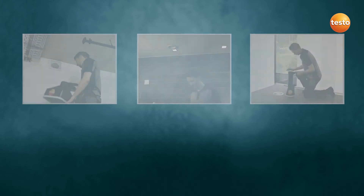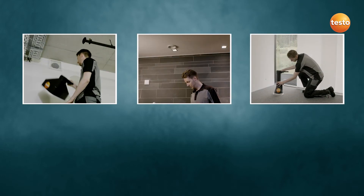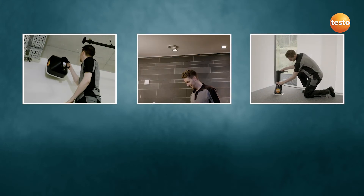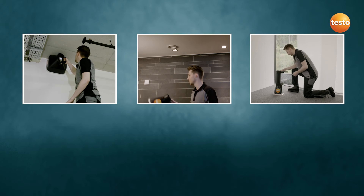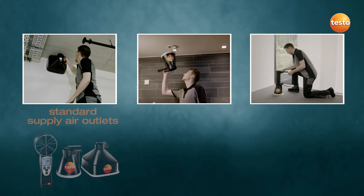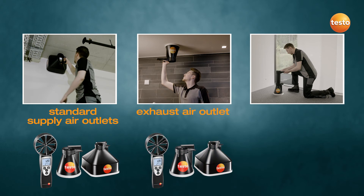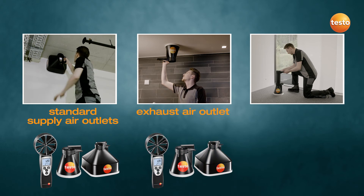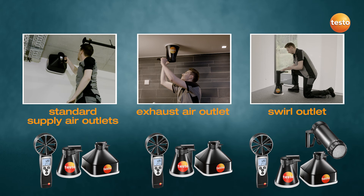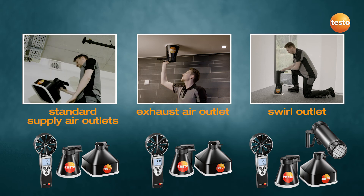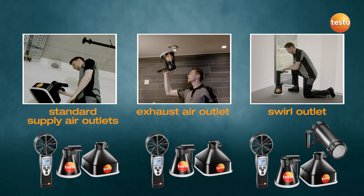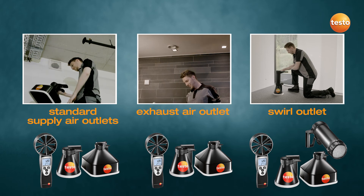Let's summarize which measuring tasks you can carry out with the Testo 417: 1. Measure faster at standard supply air outlets. 2. Achieve accurate values at exhaust air outlets. 3. Achieve utmost accuracy at swirl outlets even with turbulent airflow.